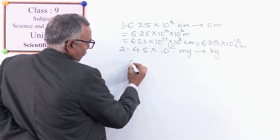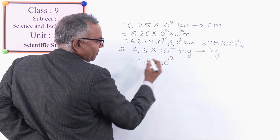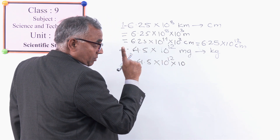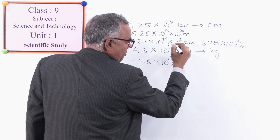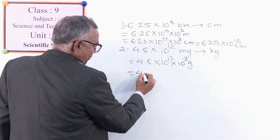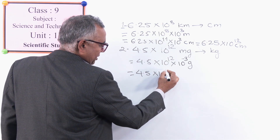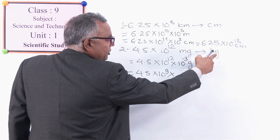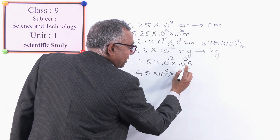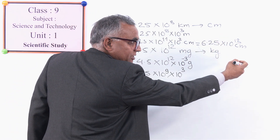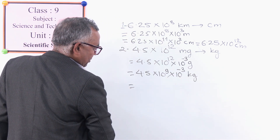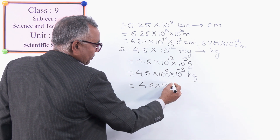Second practice: change 4.5 × 10¹² milligrams into kilograms. Change milligrams to grams — smaller to bigger, write value of milli as 10⁻³: gives 4.5 × 10⁹ grams. Then change grams to kilograms — smaller to bigger, write value of kilo as 10⁻³: result is 4.5 × 10⁶ kilograms.